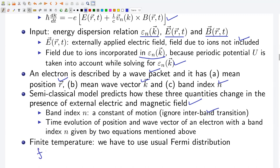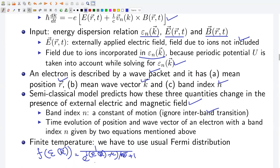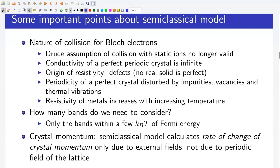The time evolution of position and wave vector of an electron with band index n is given by the two equations of motion. The effect of finite temperature can be incorporated by the Fermi distribution, the same way we did for free electrons. The Fermi distribution is given by f(E_{nk}) equals 1 divided by (e^((E_{nk} - mu) / k_B T) + 1), where mu is the chemical potential, k_B is Boltzmann's constant, and T is temperature. Since these are Bloch electrons, we have to add the band index n.